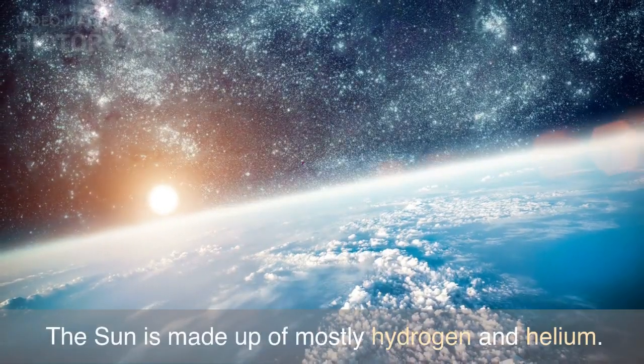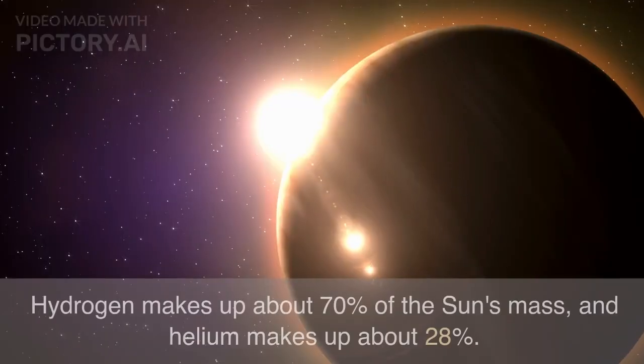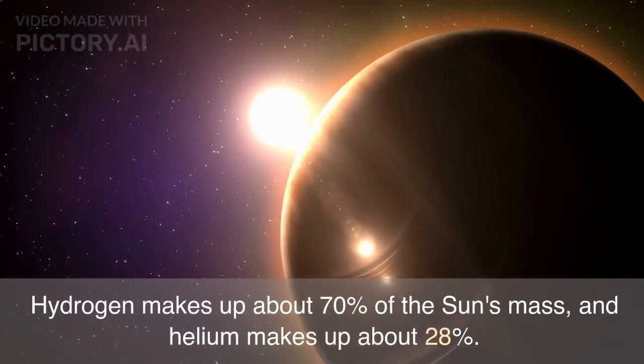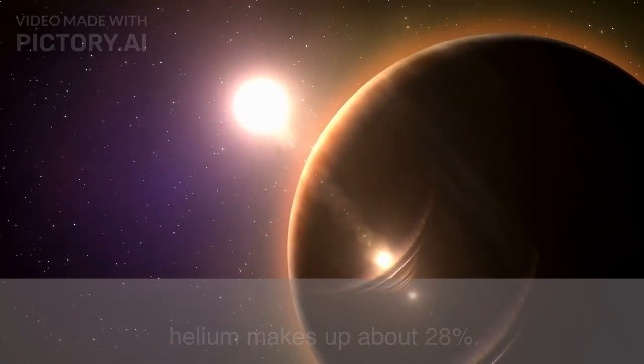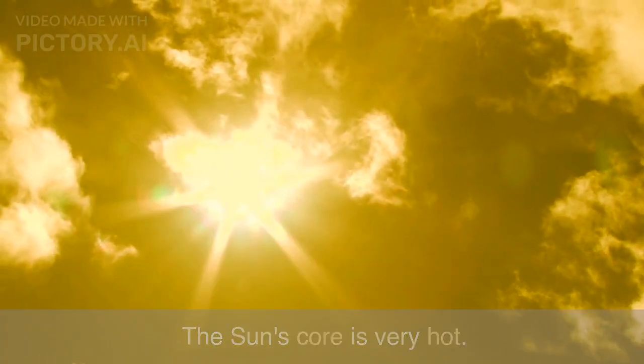The Sun is made up of mostly hydrogen and helium. Hydrogen makes up about 70% of the Sun's mass, and helium makes up about 28%.